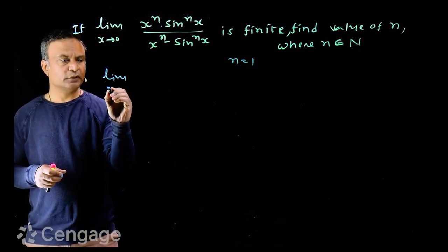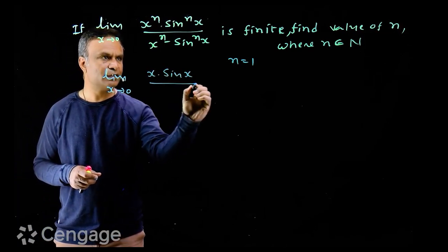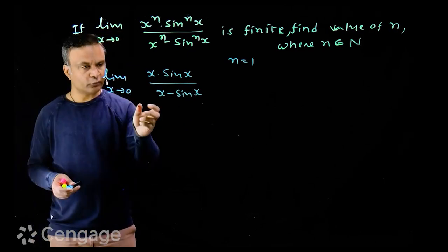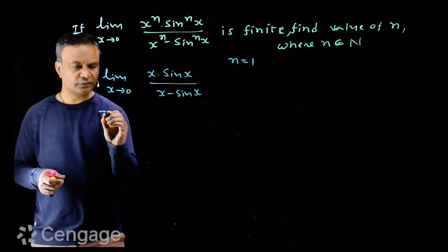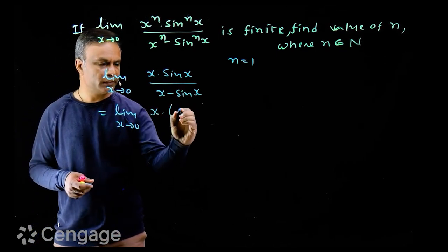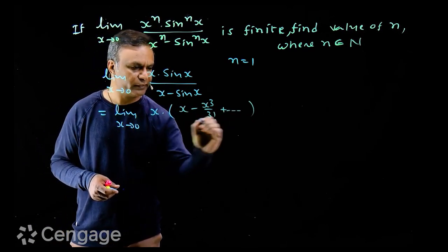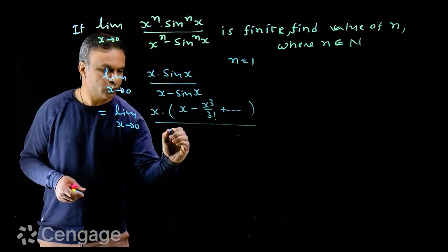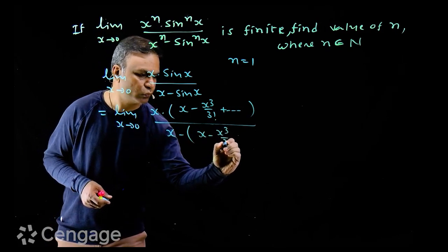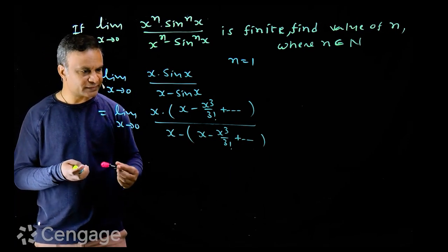For n = 1, we have the limit as x tends to zero of x·sin(x) upon x minus sin(x). To evaluate this limit, we can use the expansion formula of sine x. We have the limit as x tends to zero of x multiplied by the expansion of sin(x), which is x minus x³/3! and so on, over x minus the same expansion.